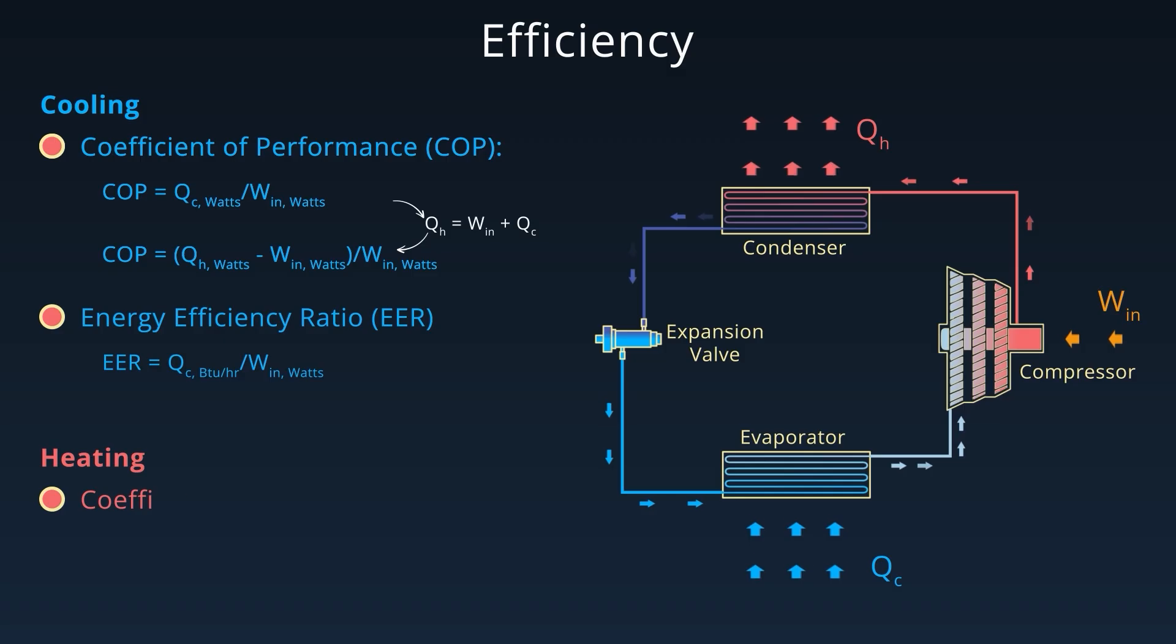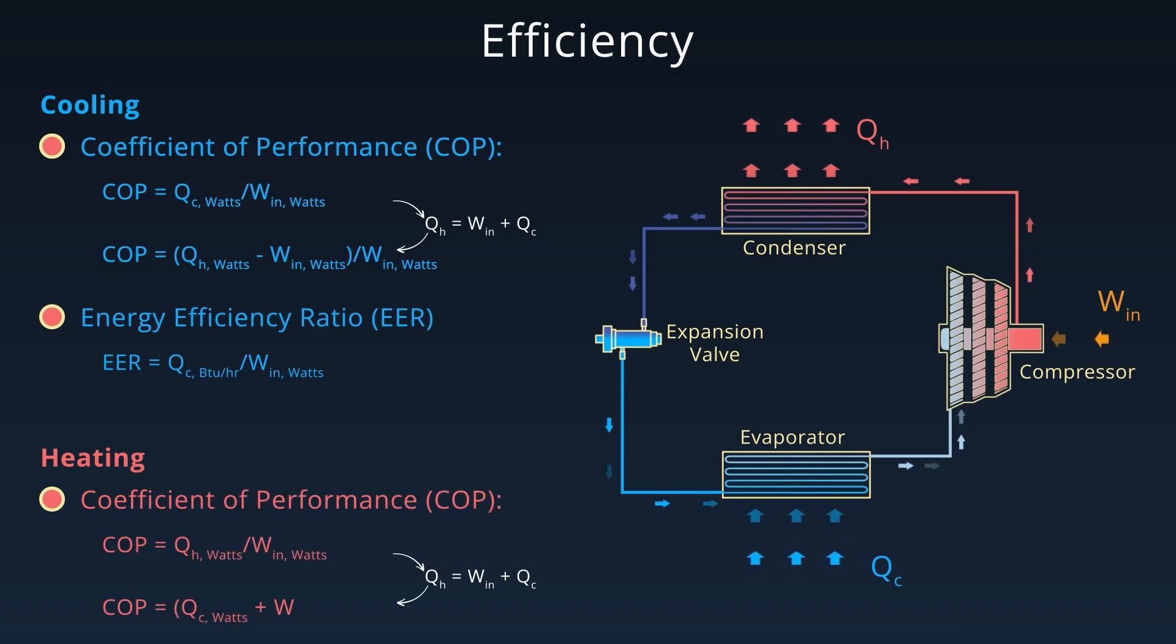For heating mode, the COP is defined as the amount of heat delivered to the high temperature environment divided by the work input to the compressor. EER uses imperial units while COP is dimensionless. A well-optimized system maximizes the heat absorption while minimizing the work input. In other words, a high COP or EER means a more efficient system.